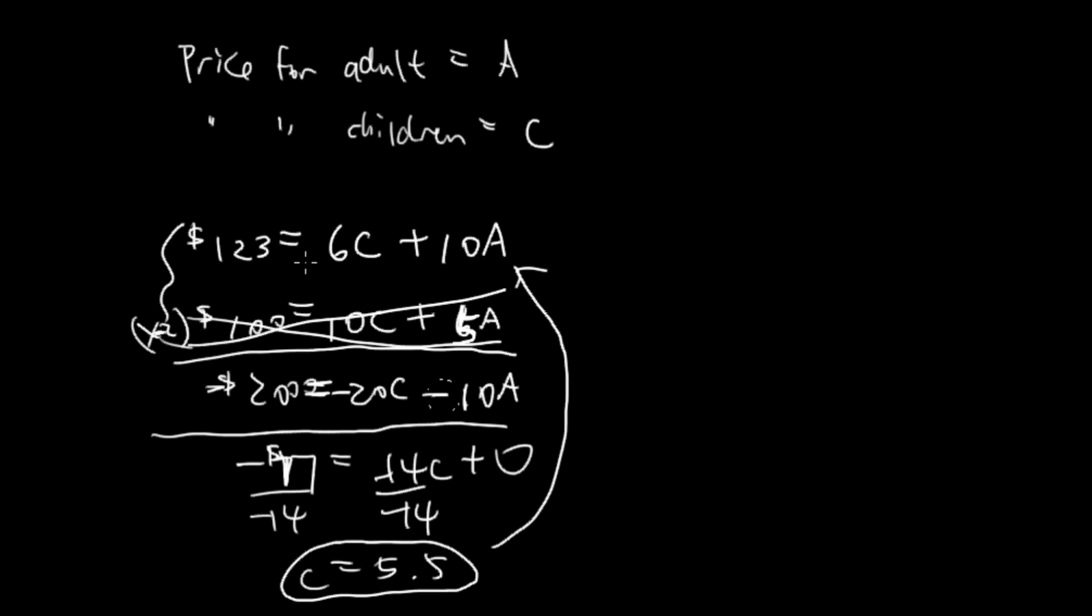So we have 123 dollars equals six times 5.5 plus 10A. Six times 5.5 is 33. This equals 123 plus 10A.